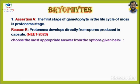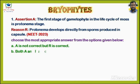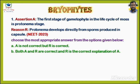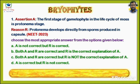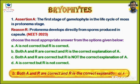Choose the most appropriate answer from the options given below. Options are: A. A is not correct, but R is correct. B. Both A and R are correct, and R is the correct explanation of A. C. Both A and R are correct, but R is not the correct explanation of A. D. A is correct, but R is not correct. Answer is Option B: Both A and R are correct, and R is the correct explanation of A.